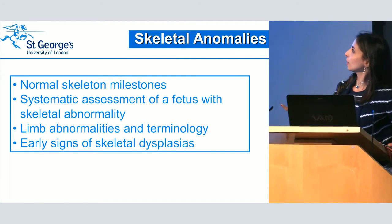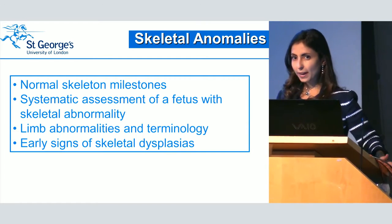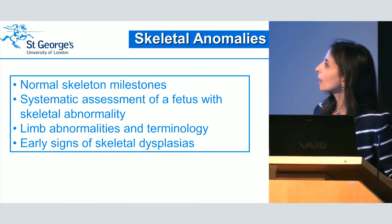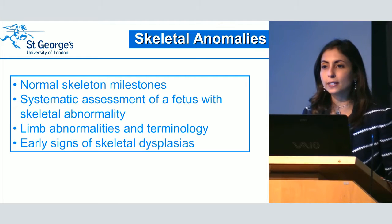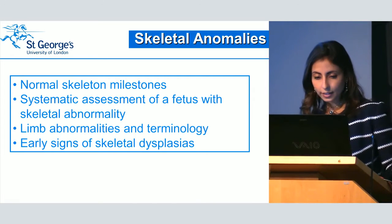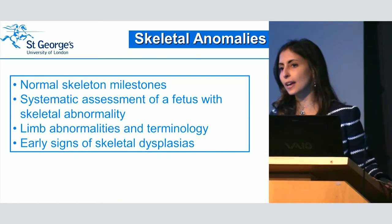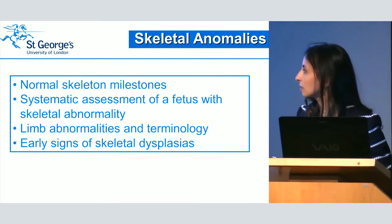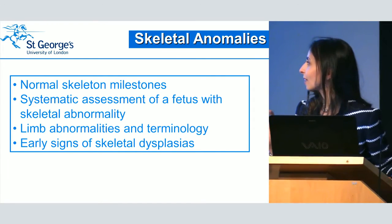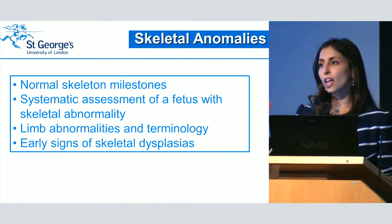So what are the objectives or what we're going to cover? We're going to cover what are the normal skeletal milestones, and it's really important to know so that you know what you expect, what is normal. So when you don't see it or you see something different, you know that this is abnormal. How do you do systematic assessment of a fetus with skeletal abnormality? We're going to talk about limb abnormalities and terminology, especially those you're likely to pick up in the first trimester. And I'm going to touch very briefly on the early signs of skeletal dysplasia that we published.